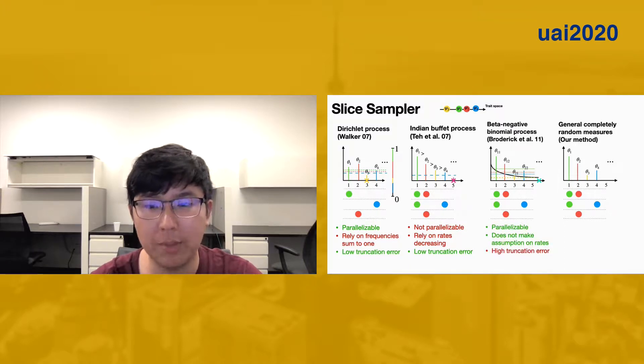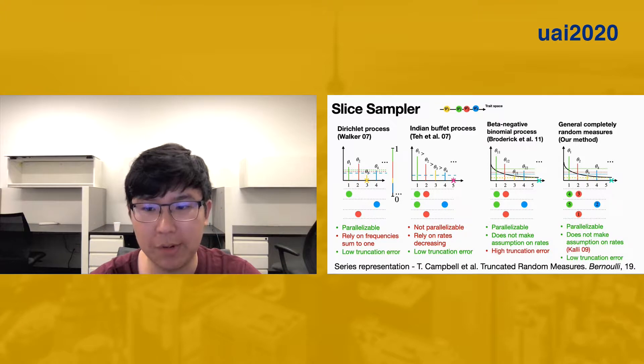Unlike previous methods that work on a case-by-case basis, we developed a method similar to the work of Kelly et al. that uses a deterministic sequence but does not make any assumption on the rates, and therefore works for general completely random measures. Our slice sampler is based on the series representation and is known to have low truncation error. We use Poisson process theory to collapse out the infinite tail of this completely random measure in order to resample the last active stick.